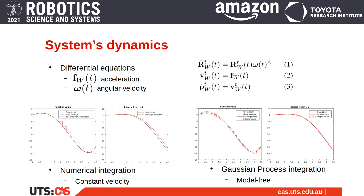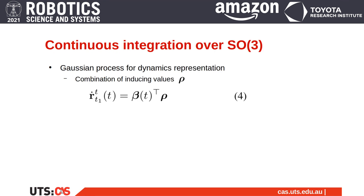We propose a novel optimization-based continuous integration method over SO3 using Gaussian processes to model the system's dynamics. Gaussian process regression is a non-parametric probabilistic interpolation method. Using Gaussian processes and linear operators allows for model-free accurate integration, as shown on the right. A comprehensive explanation of the required background and the full derivation can be found in the paper. But in short, Gaussian process regression can be seen as the combination of inducing values rho, also called training values, as shown in equation 4.